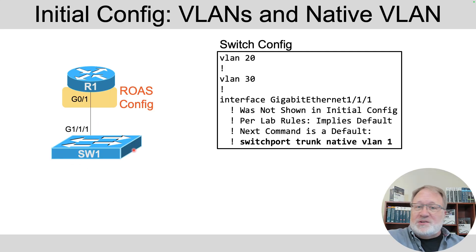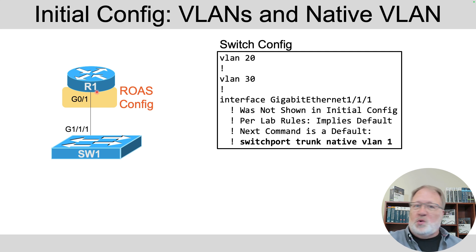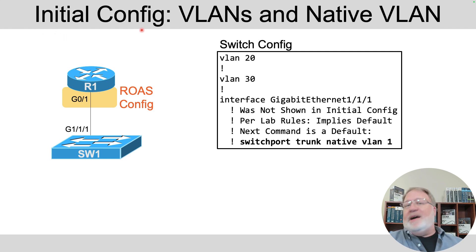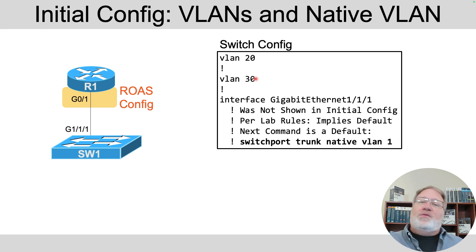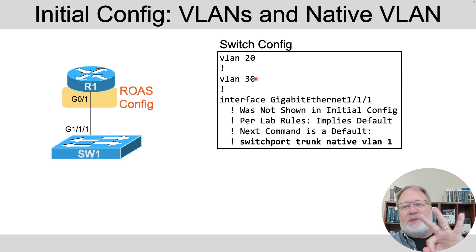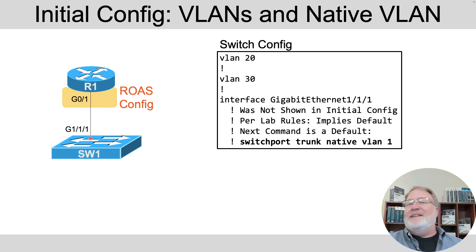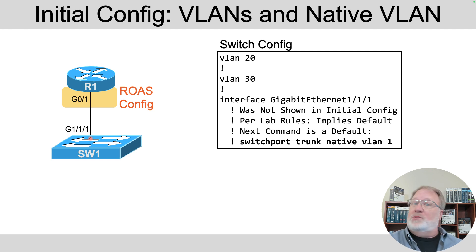Next, let's talk about the LAN switch side — you have to configure both the router and the switch to get router on a stick working. The initial config per the lab already included the VLAN 20 and VLAN 30 commands to create the VLANs. VLAN 1 can't be deleted so it's always there. The three VLANs we care about are already configured in the switch, so you didn't have to add that configuration.